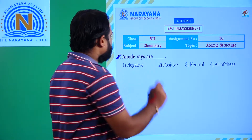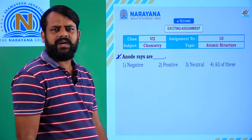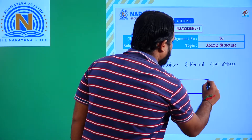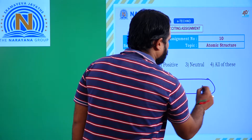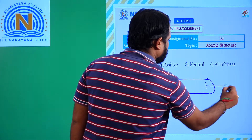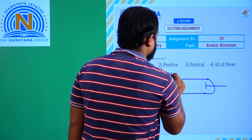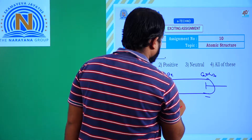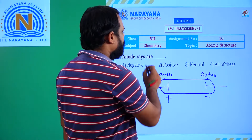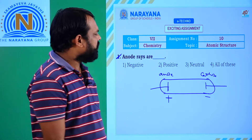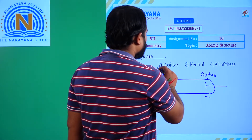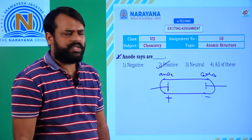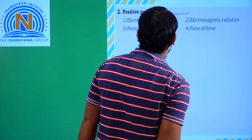Question number one: anode rays are? So anode and cathode — here is the negative terminal and here the positive terminal. Anode rays are the rays which are coming from the positive terminal, so anode rays are positive rays. The second option is correct.